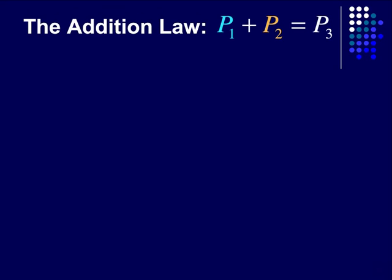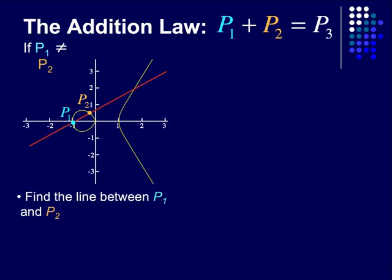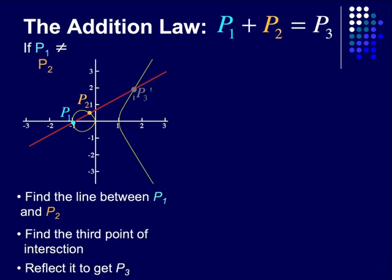With this in mind, we can define the addition law, having point one plus point two equal to point three. We have two cases. The first case is adding two separate points. Step one is to find the line between point one and point two, then find the third point of intersection, and reflect it to get point three.